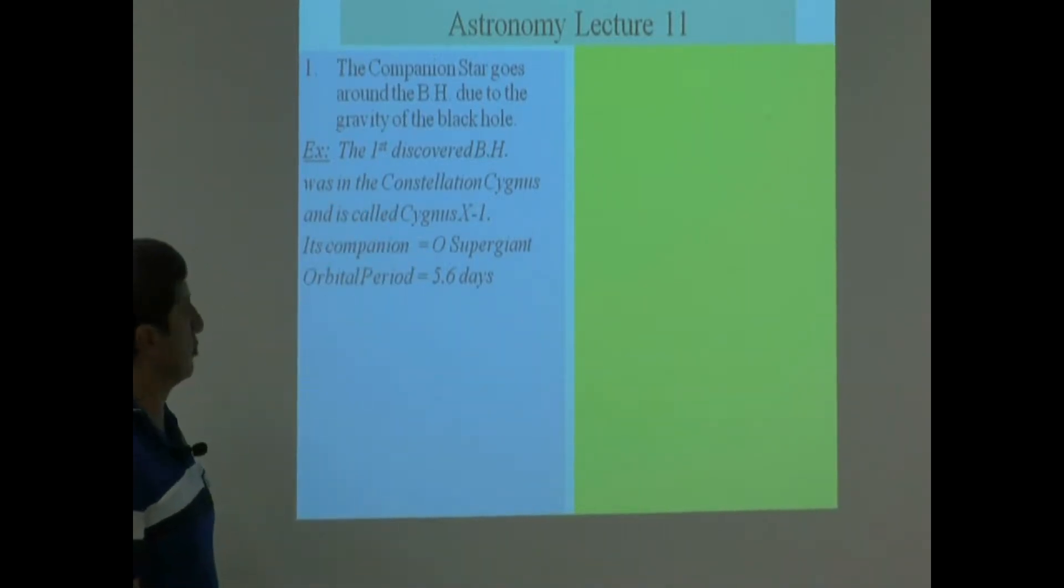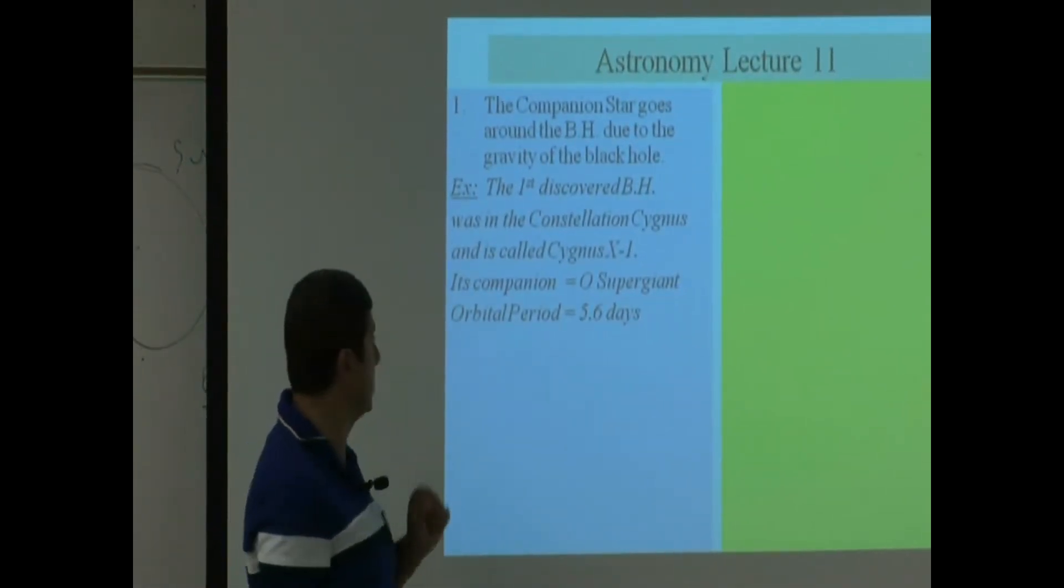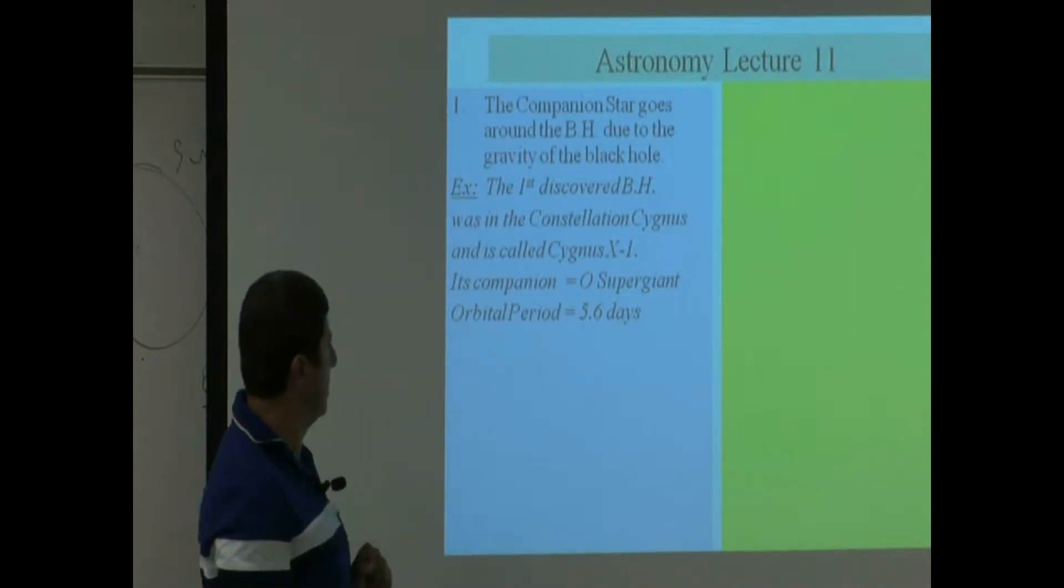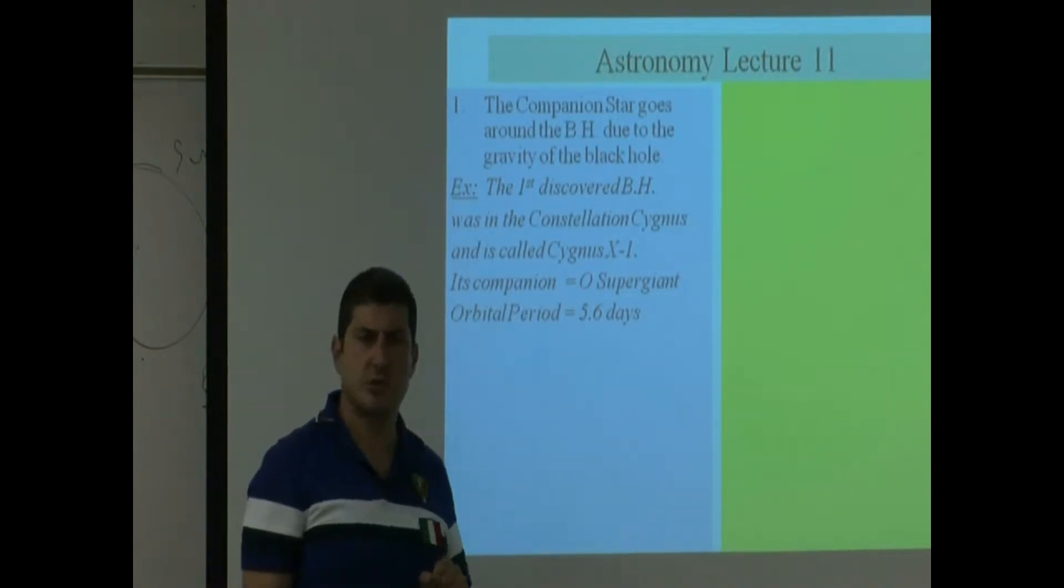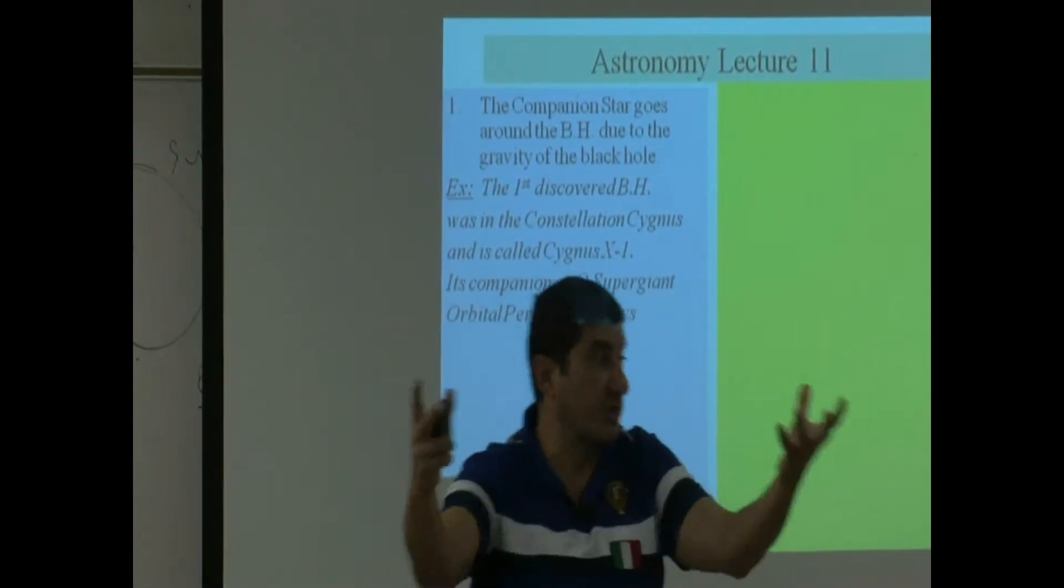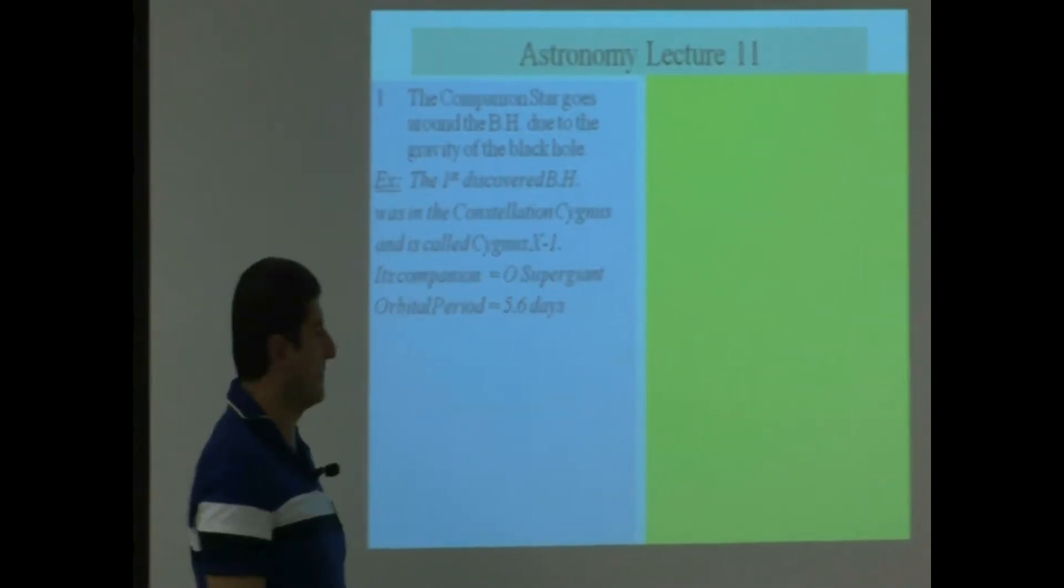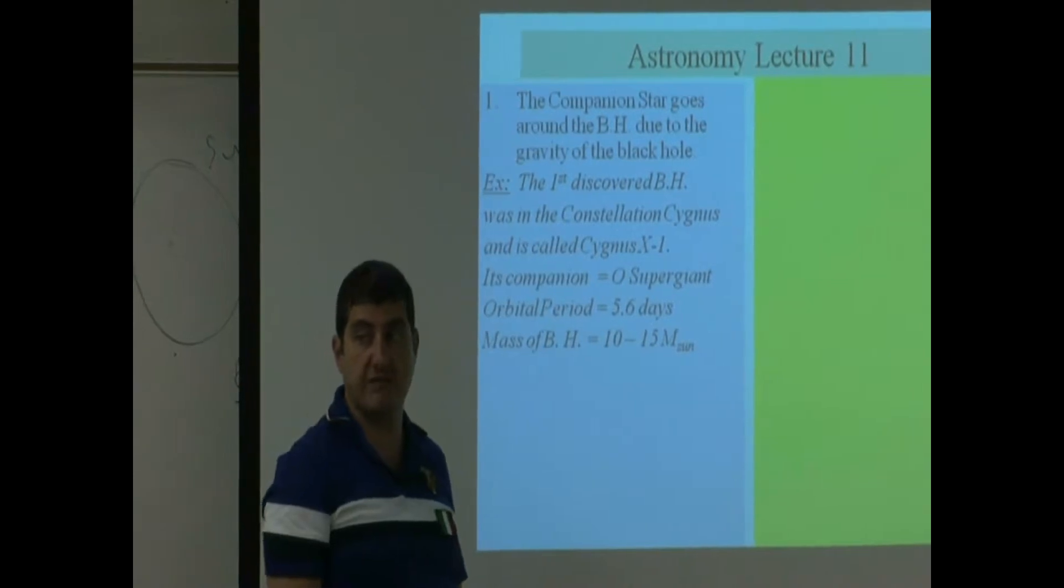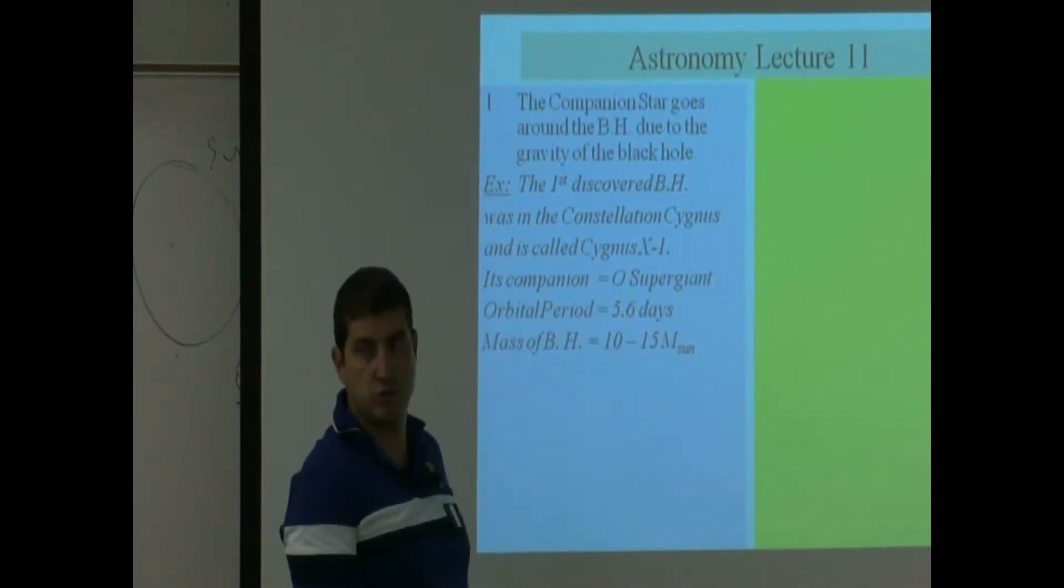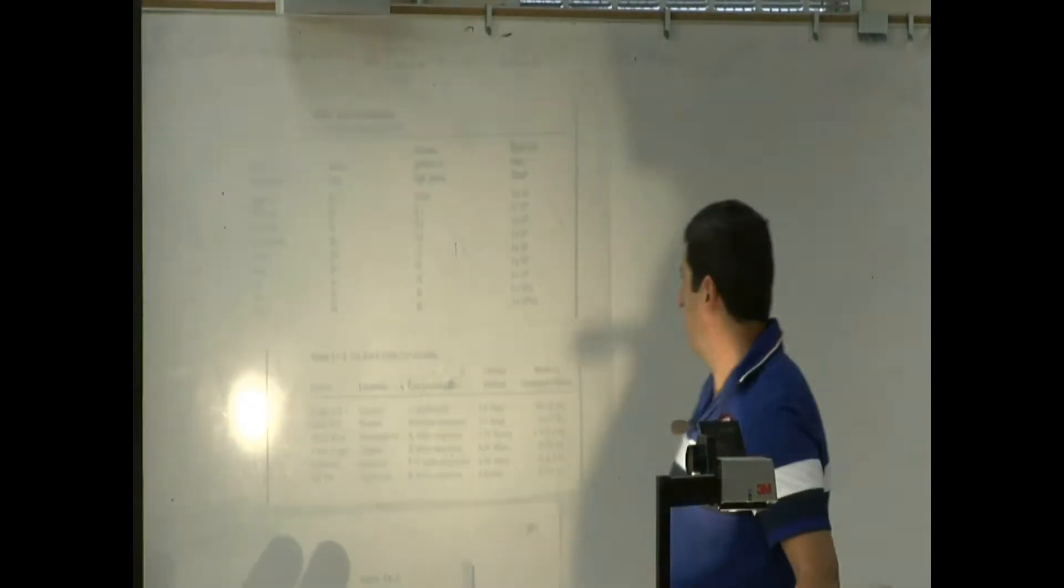So the first discovered black hole was in the constellation Cygnus. That was the first confirmed discovery. It was called Cygnus X1. So basically you had this companion star which is an old supergiant, huge, huge. And it was simply going around every 5.6 days. And then from there we calculated that the black hole must have a mass of roughly 10 to 15 solar masses. We did our calculations. Even though we can't see it, it's black, we still can tell that it's there. And we're able to do similar kind of calculations like this.